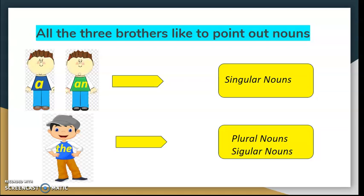All three brothers like to point out nouns. The twin articles, A and An, like to point out singular nouns. The elder brother, The, likes to point out both singular and plural nouns.